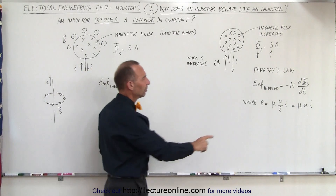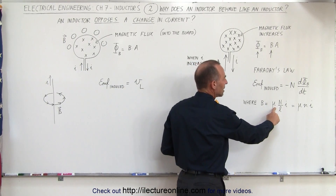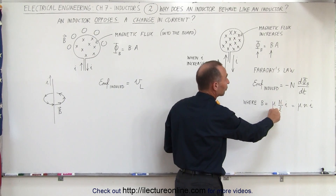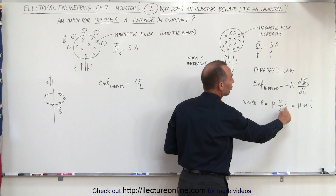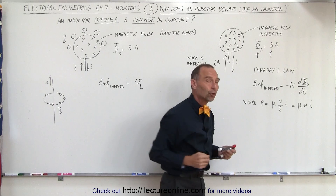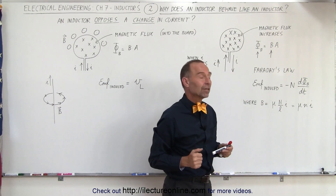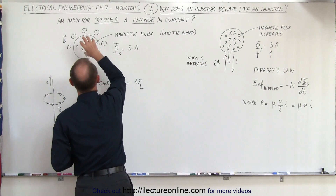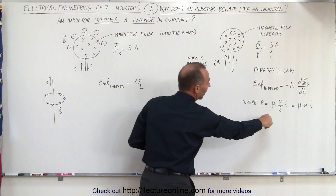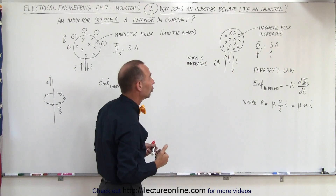The magnetic field inside a solenoid can be calculated as the permeability of free space or the core material, times the number of loops per unit length of the solenoid, times the strength of the current. Notice that if you double the current, you double the strength of the magnetic field. So the amount of flux depends upon the structure of the loop and the amount of current flowing through it.